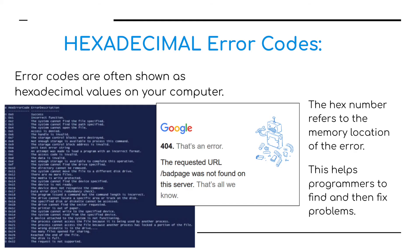Moving on to error codes — this is a short topic. Error codes are often shown as hexadecimal values. Windows uses them a lot, and you may be familiar with 404 (page not found). They are also used for devices like printers and even washing machines — devices with a microcontroller and a small screen. If something goes wrong, an error message pops up. It's useful for service engineers who can see the error code and know what the problem is — for example, whether a printer has a paper jam or is out of toner.